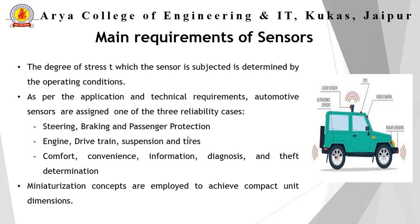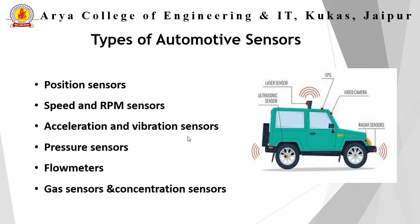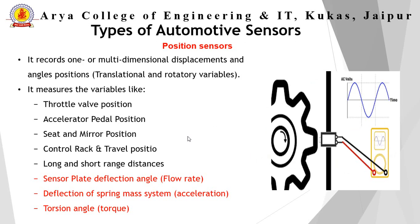The types of automotive sensors covered in this presentation include: position sensors, speed and RPM sensors, acceleration and vibration sensors, pressure sensors, flow sensors, gas sensors, and concentration sensors. The position sensor records one or multi-dimensional displacement and angular position — either translational or rotatory variables.